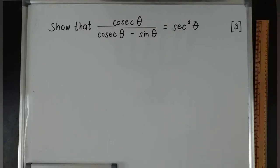This is actually a past year question in IGCSE additional mathematics. How are we going to attack this kind of problem? This is a proving problem in trigonometric identities.